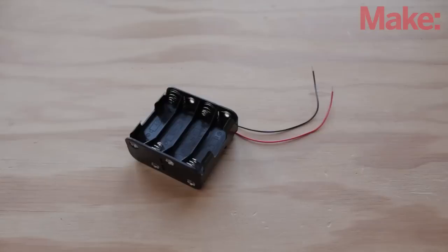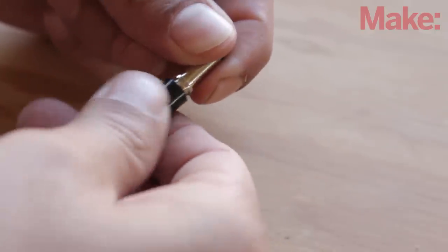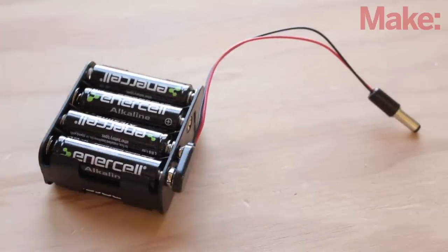Now, let's build a battery pack to make the project mobile. Simply solder a power connector to the battery pack wires, and reattach its sleeve. Now, all you have to do is fill it with AA batteries, and it's ready to power your Arduino.